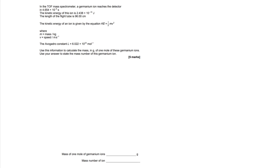Let's read through the question and check out what's happening here. In the time-of-flight mass spectrometer, a germanium ion reaches the detector in 4.654 × 10⁻⁶ seconds. The kinetic energy of this ion is 2.438 × 10⁻¹⁵ joules. The length of the flight tube is 96 centimeters. We're also given the kinetic energy equation — KE = ½mv² — which is always given to you.